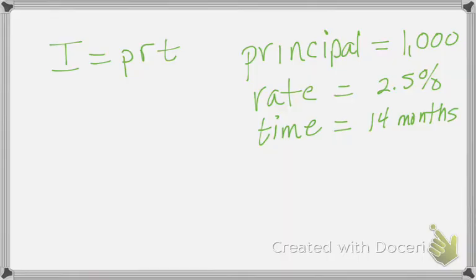Let me show you how this translates into a regular example. I'm finding simple interest with a principal of $1,000, a rate of 2.5%, and a time of 14 months. If I turn 14 months into years by doing 14 divided by 12,